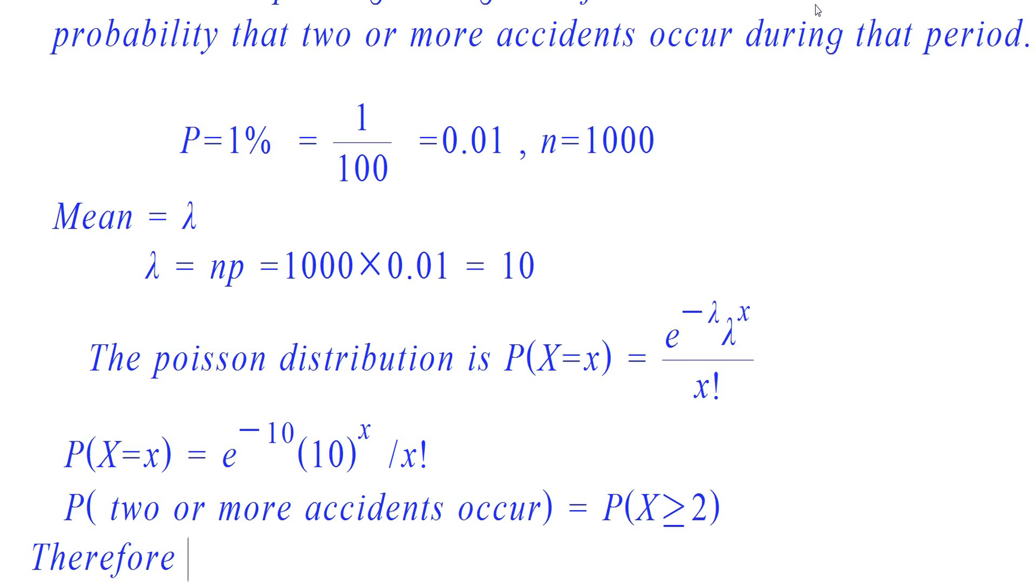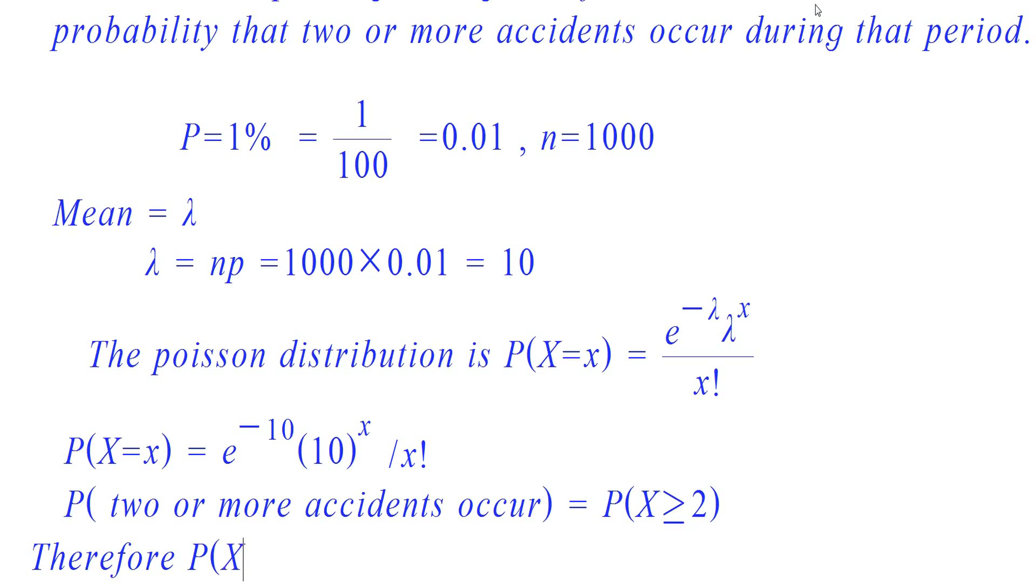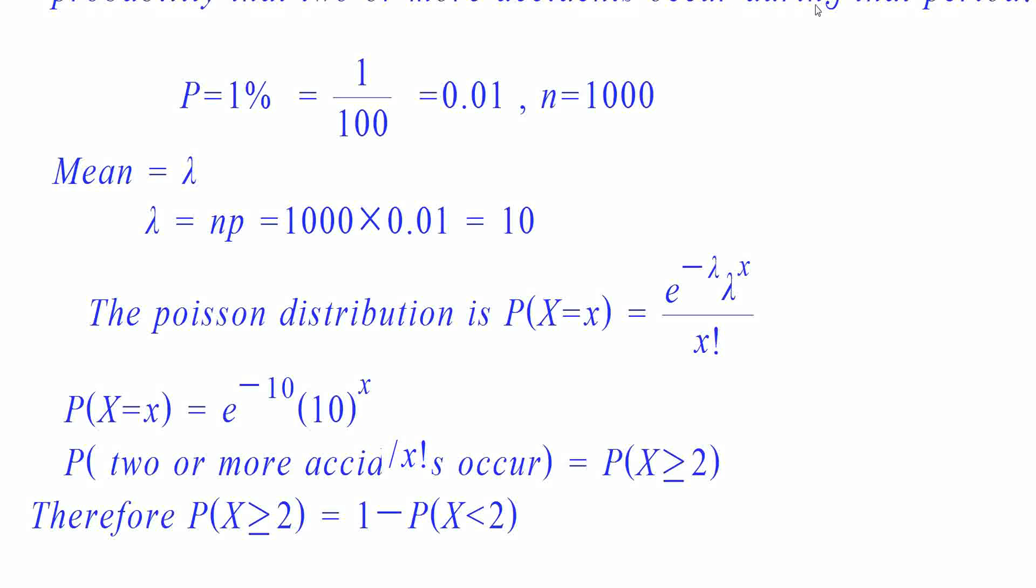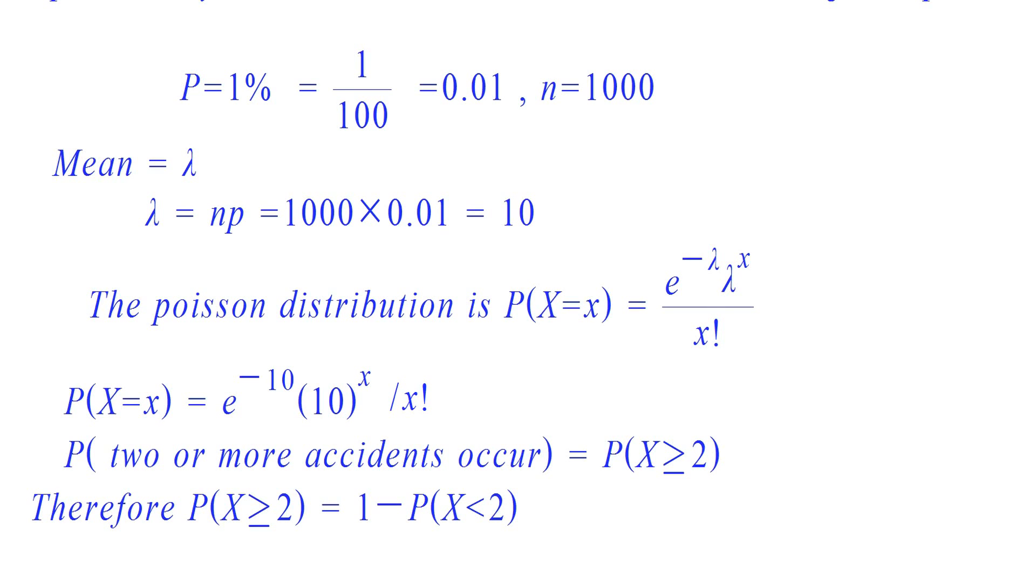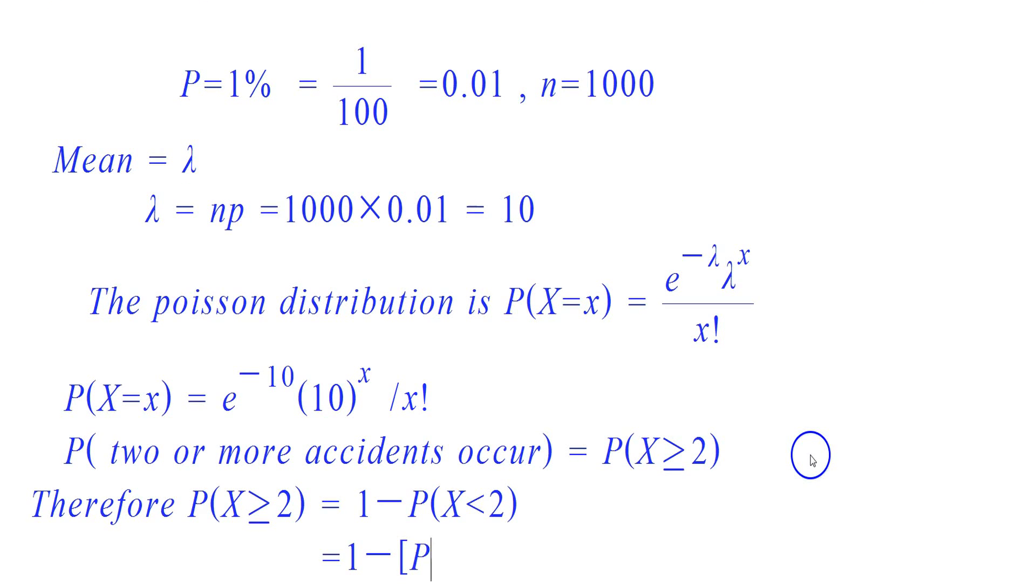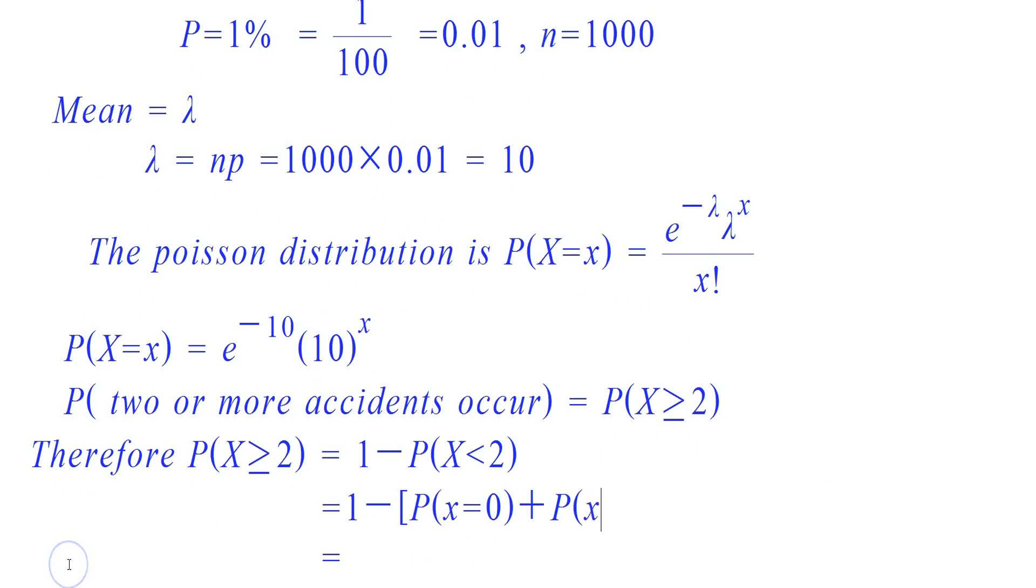Probability of X greater or equal to 2 can be written as 1 minus probability of X less than 2. That is equal to 1 minus the sum of probability of X equals 0 plus probability of X equals 1.